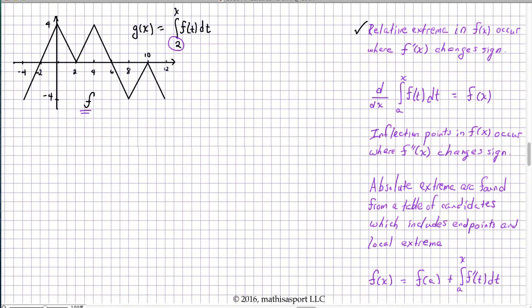As we can see from the diagram, F of X changes sign here and it changes sign here. Note that it's zero at certain points, but it's not changing sign there. Students inclined to look for where a function is zero are misled — you have to look for where the function changes sign. So with that, let's write an answer for Part A.